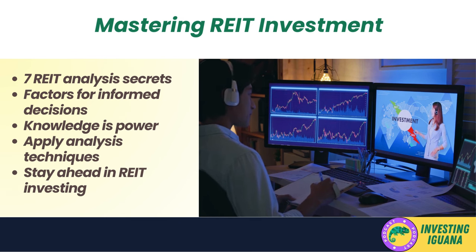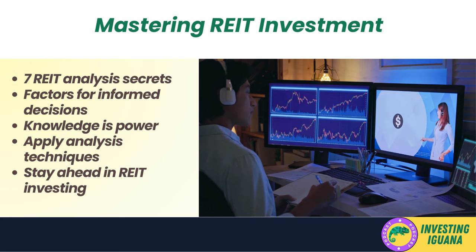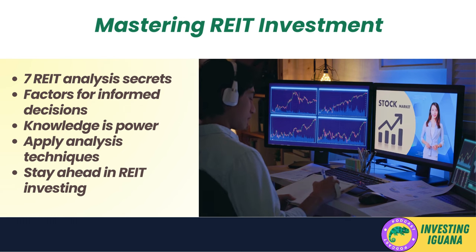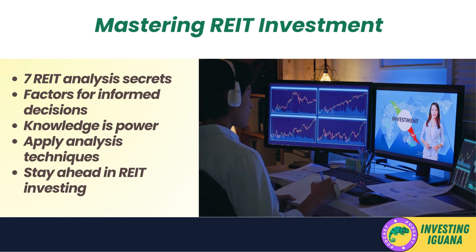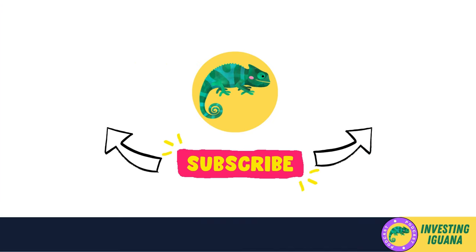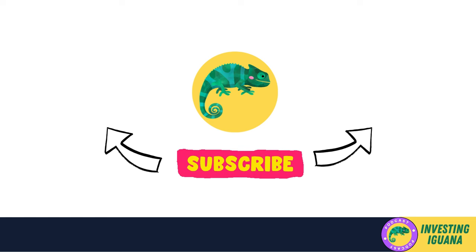There you have it — the seven REIT analysis secrets. By considering factors like FFO, AFFO, occupancy rates, lease terms, debt levels, portfolio diversification, management expertise, economic conditions, and dividend consistency, you'll be well equipped to make informed decisions when investing in REITs. If you found this video helpful, be sure to smash that like button and subscribe to the Investing Iguana channel for more insights. Leave a comment below and let me know which secret you found most eye-opening. As always, stay savvy, keep learning, and happy investing.